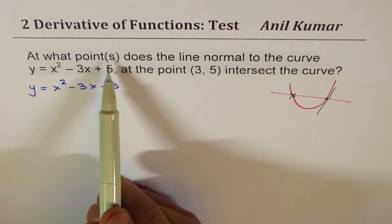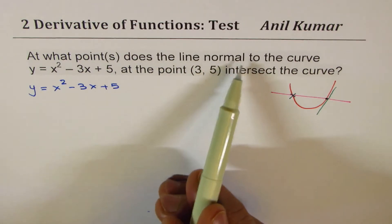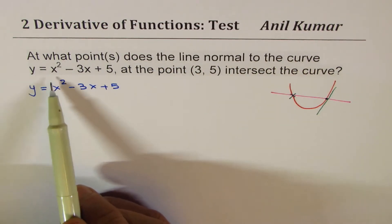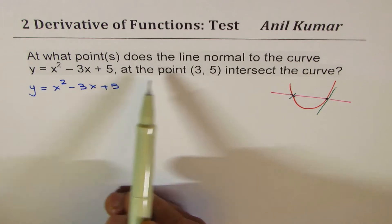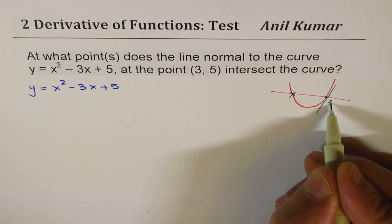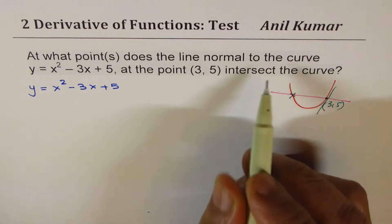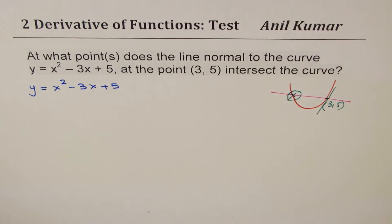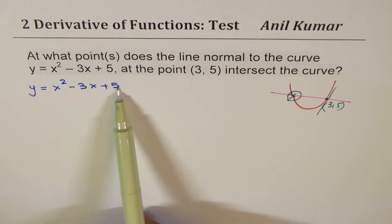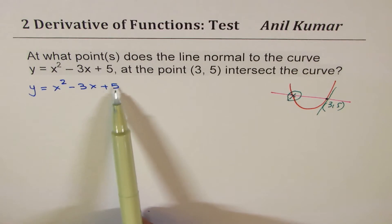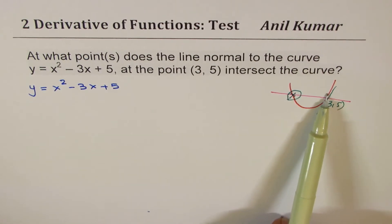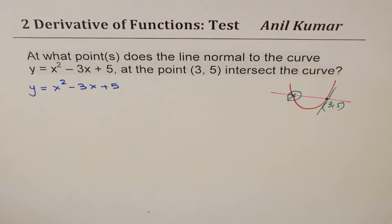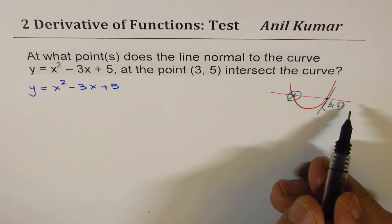So the question is: at what points does the line normal to the curve y = x² - 3x + 5 at point (3, 5) intersect the curve? We need to find the other point of intersection. We have verified that at x = 3, the value of y is 5, since 9 - 9 + 5 = 5, confirming the point is on the curve.